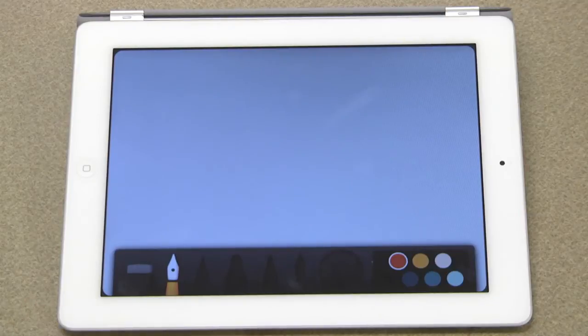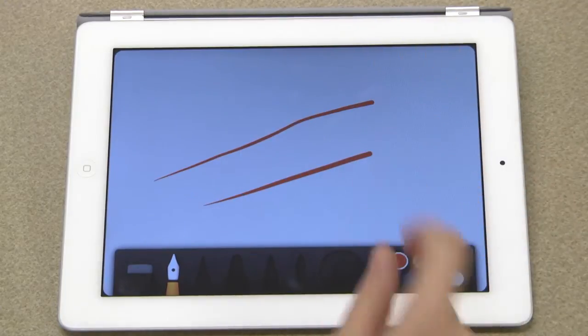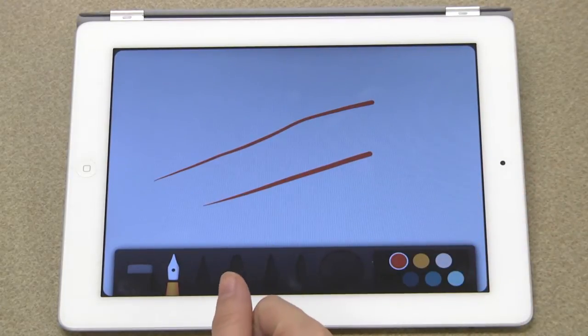One thing to note about the calligraphy pen is that it makes heavier lines the lighter you draw. This may seem counterintuitive at first.